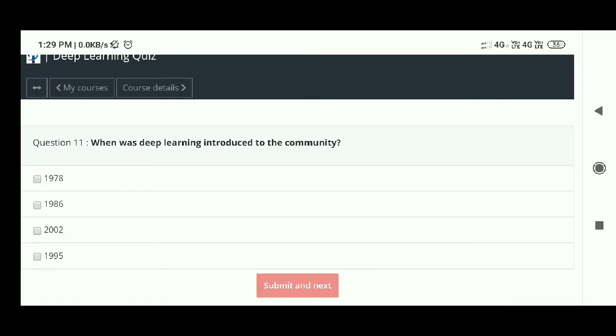11th question: When was deep learning introduced to the community? The answer is - 1986, option B. 12th question: Which is the most direct application of neural networks? The answer is - pattern classification.